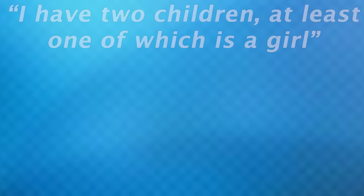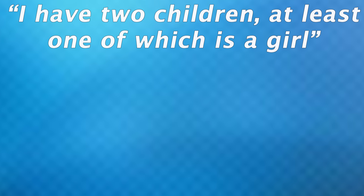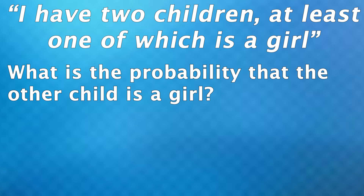Imagine you meet a parent who says they have two kids, at least one of which is a girl. The question is: what is the probability that the other is also a girl — as in, what is the chance this person has two daughters? By the way, the answer is kind of weird, but what's coming after that is really strange.